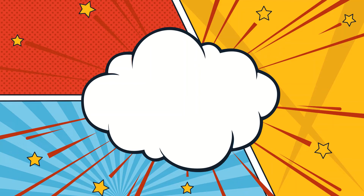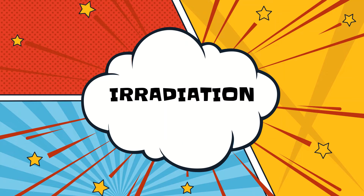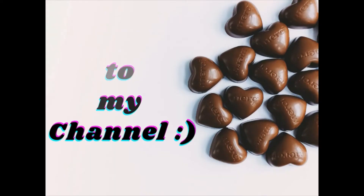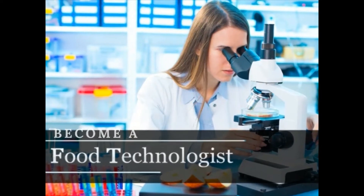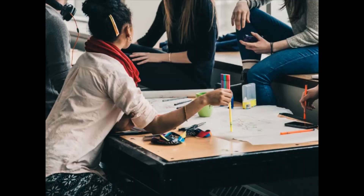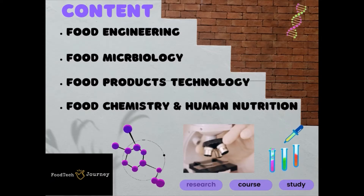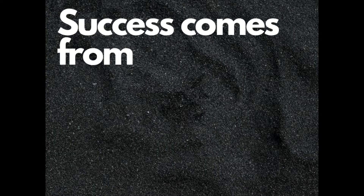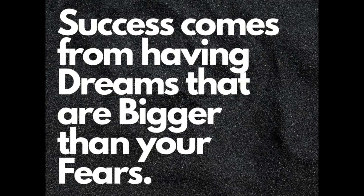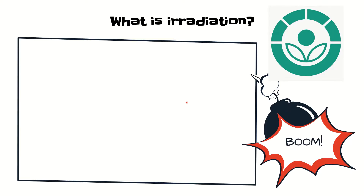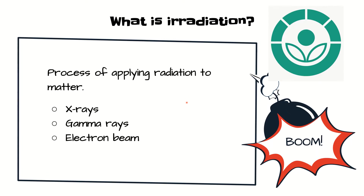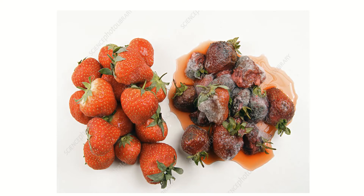Welcome back to Food Tech Journey. Today we are going to discuss food irradiation. Irradiation is a process of applying radiation to matter with the help of x-rays, gamma rays, electron beams, or any other medium of radiation.